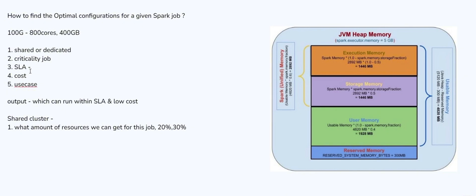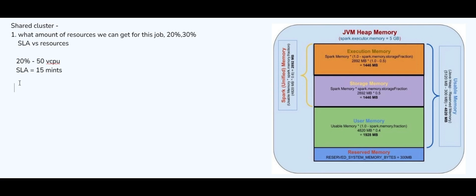It's a difference between time and cost: if you want to reduce the time, you have to use higher resources; if you want to use fewer resources, the time is going to be higher. It's time versus resources. If you use more resources, since it is parallel processing, you get less SLA time; if you want a higher SLA, you can use fewer resources. Let's understand with numbers: suppose we have 20% of cluster resources, which is 50 CPUs, and the SLA is 15 minutes — we need to run this job in 15 minutes.